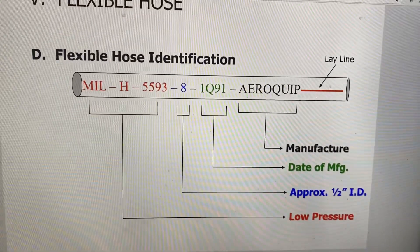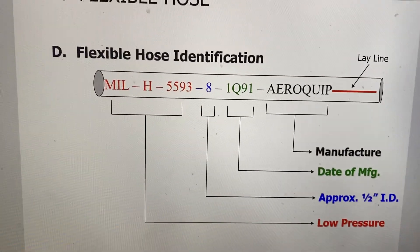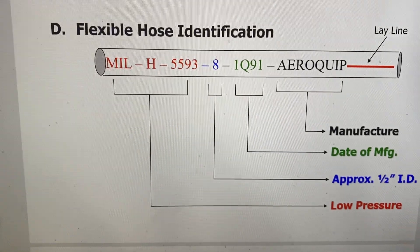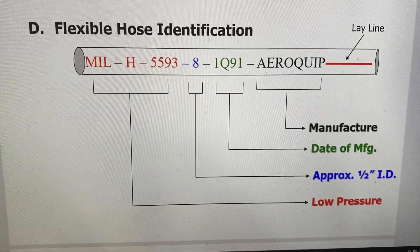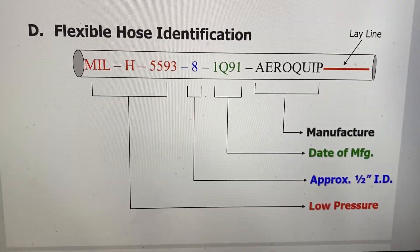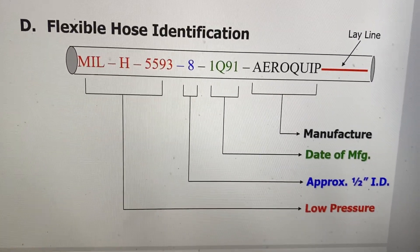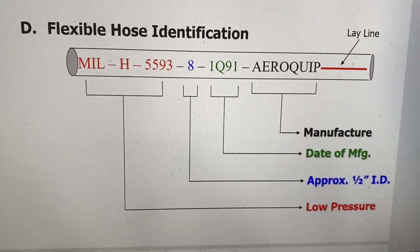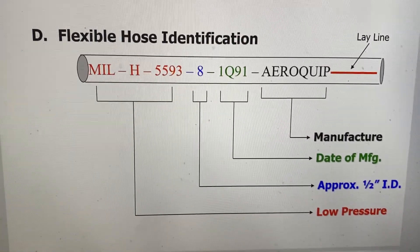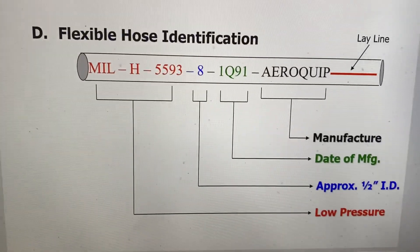On a flexible hose you're typically going to find some numbers or information. It'll look similar to what's shown on screen. The MIL-H-5593 designation identifies the pressure rating for the hose. When replacing a hose, look in the illustrated parts catalog to order it as an assembly from the manufacturer. If you can't, find the MIL spec number on the old hose and match it to raw materials for the new hose so you know you're using the correct materials. The dash-8 here indicates the sizing — flexible hose is measured by inside diameter.